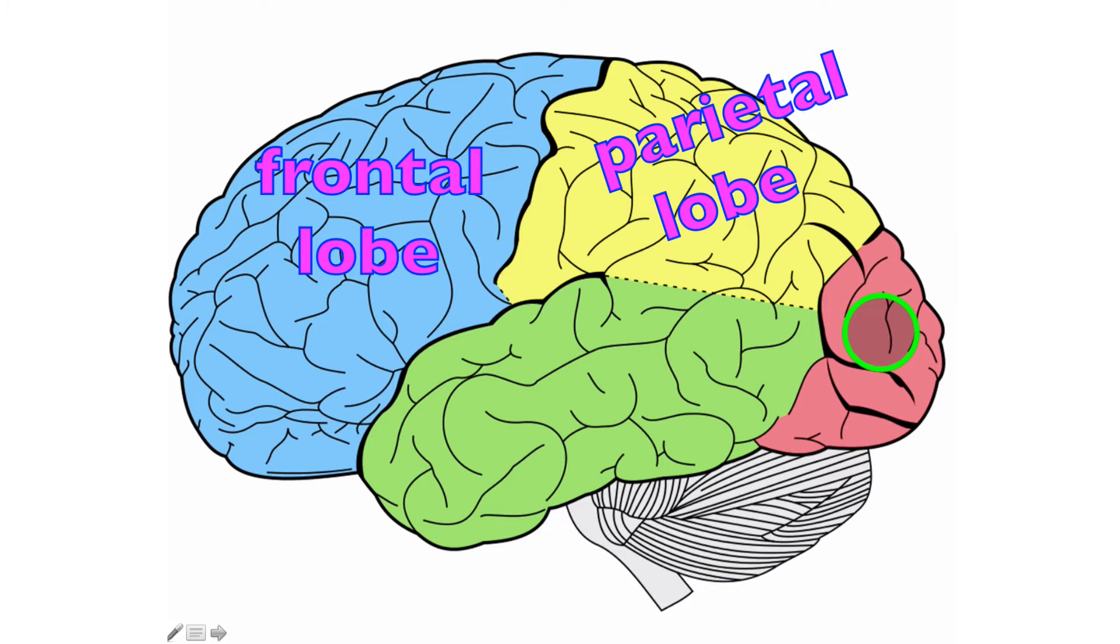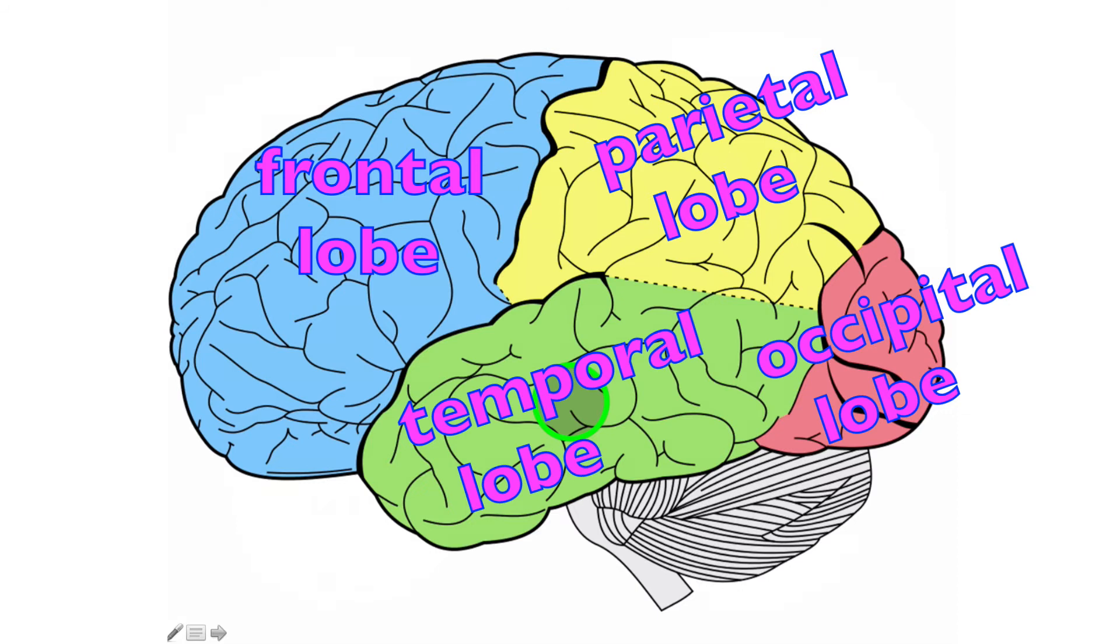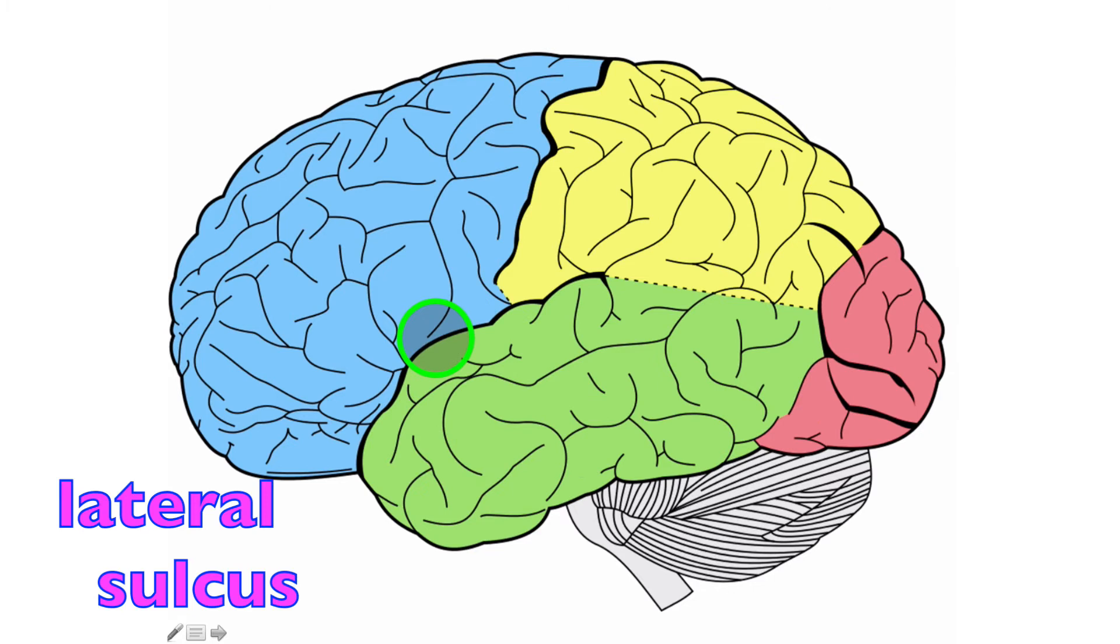The fifth lobe, which is the insula, cannot be seen from an exterior view. You would actually have to pull back the temporal lobe and look in this little gap right here where this dark line is, which is called the lateral sulcus. The lateral sulcus separates the temporal lobe from both the frontal lobe and the parietal lobe.